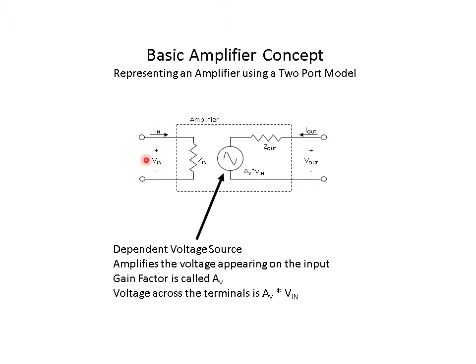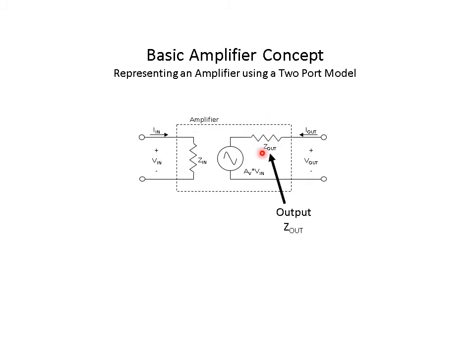The dependent voltage source doesn't have a fixed value — it has a dependent value. The output voltage across these terminals is Av times Vn, so it is some multiple of what's coming in. The gain factor Av could be 5, 10, 15, or 20, and the voltage across the terminals is Av times Vn. Finally, there is an output impedance. All sources have a non-zero output impedance, and when you hook something up to it you get a voltage divider — no source is ideal.